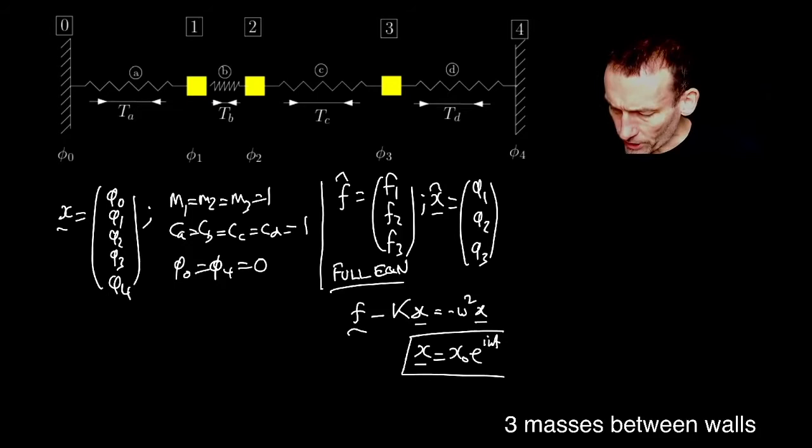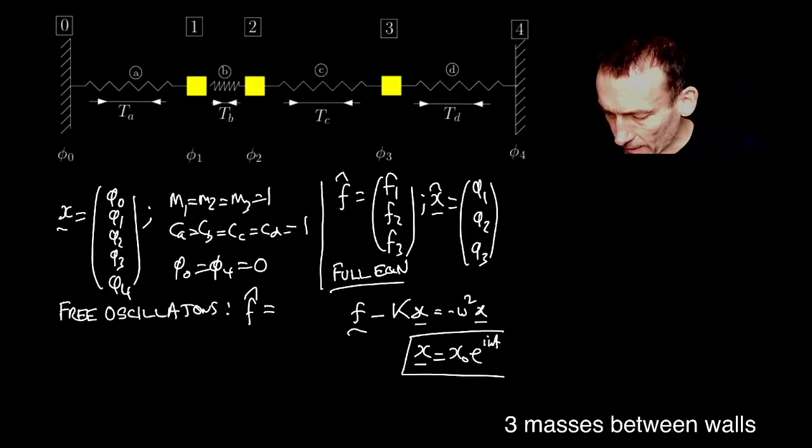Okay, but of course, the reduced system, so we're now going to have free oscillations again. Free oscillations. So that means that f̂ = 0. And let's just write down the full Laplacian.